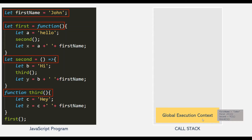And once the execution of top-level code is finished, functions finally start to execute as well. And for each and every function call, a new execution context will be created containing all the information that is necessary to run that function. And the same is true for methods, of course, because they are simply a function attached to an object. So each time we call a function, it gets its own brand new execution context.